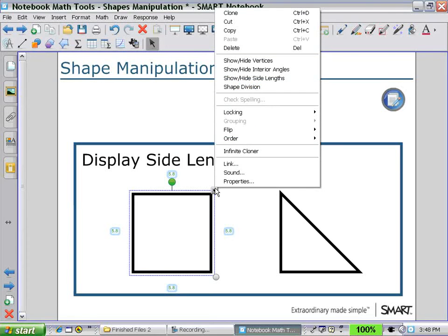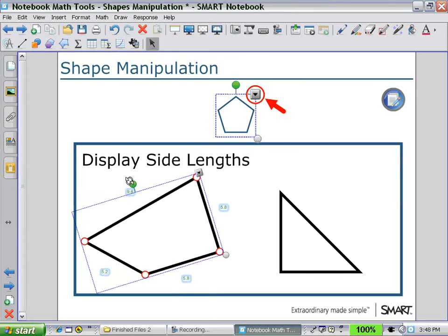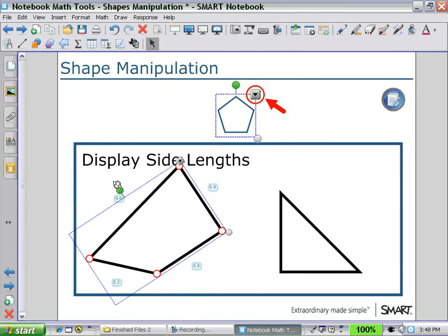Selecting for vertices, showing the vertices, we can now drag a vertex, and you can see that the side lengths recalculate. Also, if I rotate, you can see that the side lengths remain vertical and can be easily read.